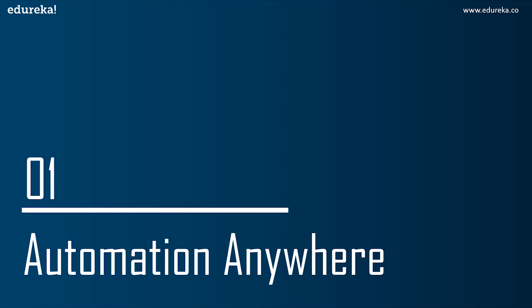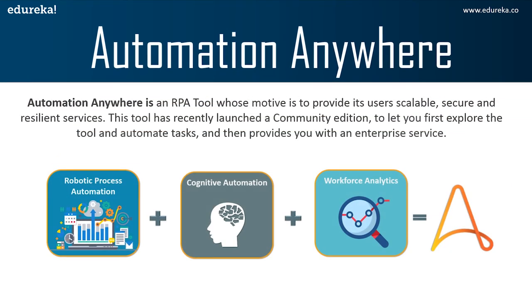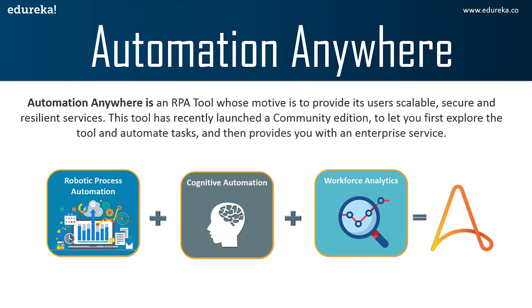The first topic is: what is Automation Anywhere? People who already know RPA will know that Automation Anywhere is an RPA tool. For those new to RPA, robotic process automation is a process to automate tasks — simple or complex — in such a way that human intervention is reduced. In the RPA industry, physical robots do not work; instead, RPA software tools are used, and Automation Anywhere is one of the most popular tools in the RPA market.